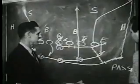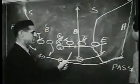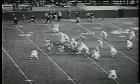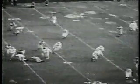This diagram represents the running pass in the split T. This left halfback coming around takes the pitch out, fakes the run, then throws the pass to the right end down the field.